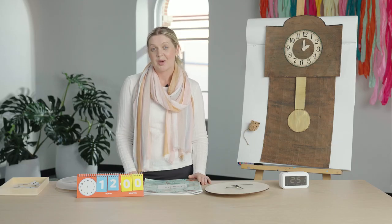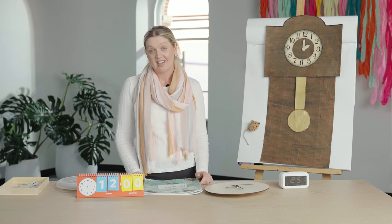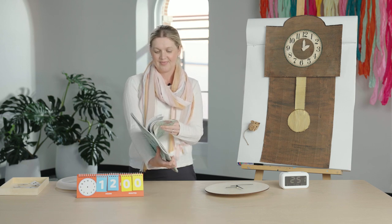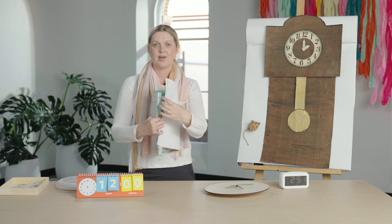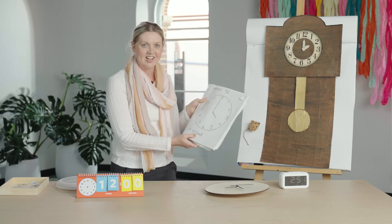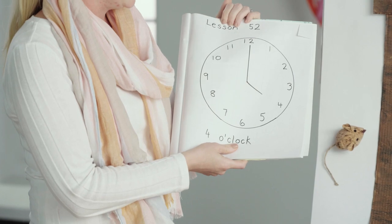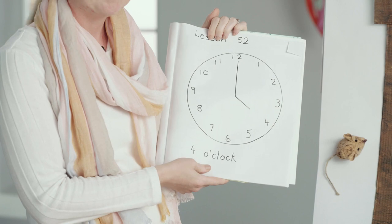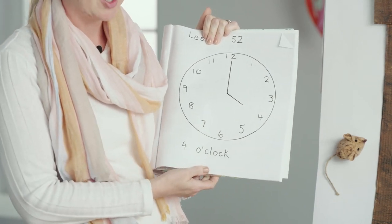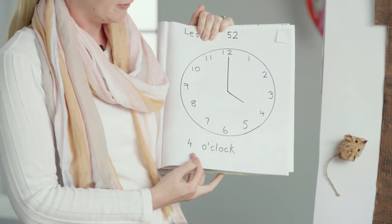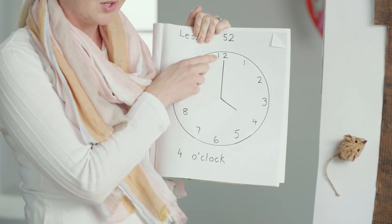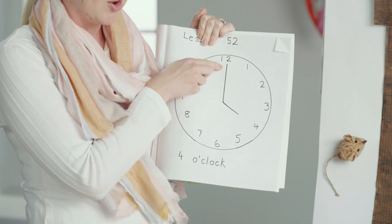How did you go with your homework task? Did you practice making o'clock times? I'll show you what I did. I drew one large analog clock and the o'clock time that I made was four o'clock. I wrote four o'clock down the bottom — my minute hand is pointing to the twelve and that is the longer hand.